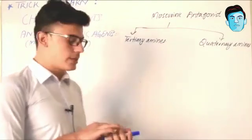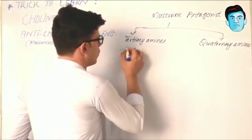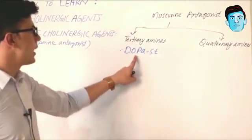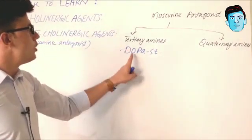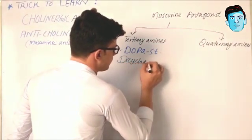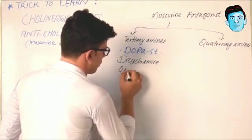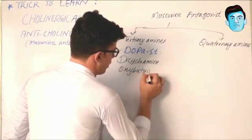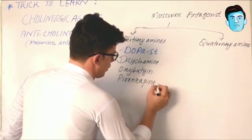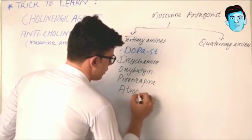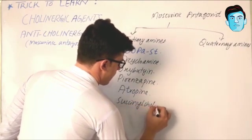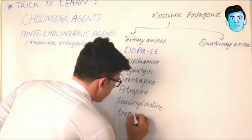Each class contains specific drugs. For tertiary amines we have the trick DOPAST, where every single word shows a particular drug: D stands for Dicyclomine, O stands for Oxybutynin, P stands for Pirenzepine, A stands for Atropine, S stands for Scopolamine, and T stands for Tropicamide.